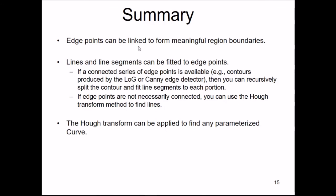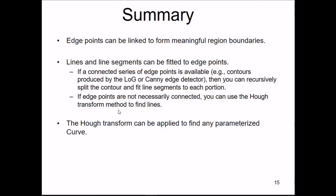In summary: edge points can be linked to form meaningful region boundaries. Line segments can be fitted to edge points if a connected series is available — contours produced by LoG or Canny — then recursively split and fit line segments to each portion. If edge points are not necessarily connected, use the Hough transform to find lines. The Hough transform can be applied to find any parameterized curve. This concludes our study of boundary finding.